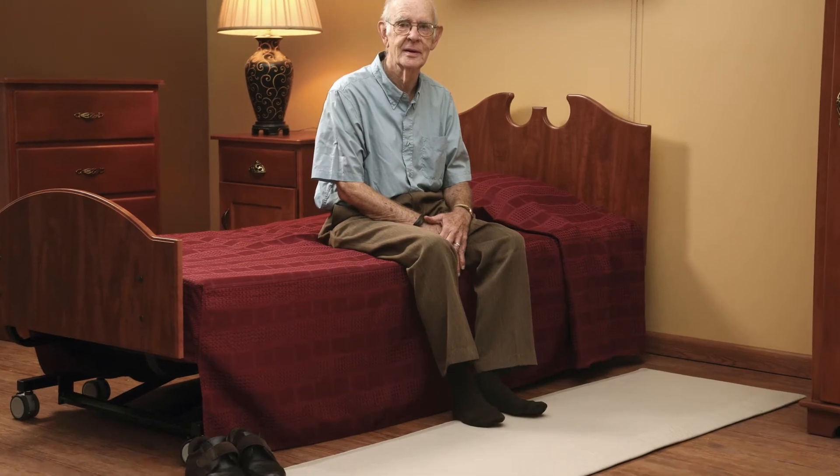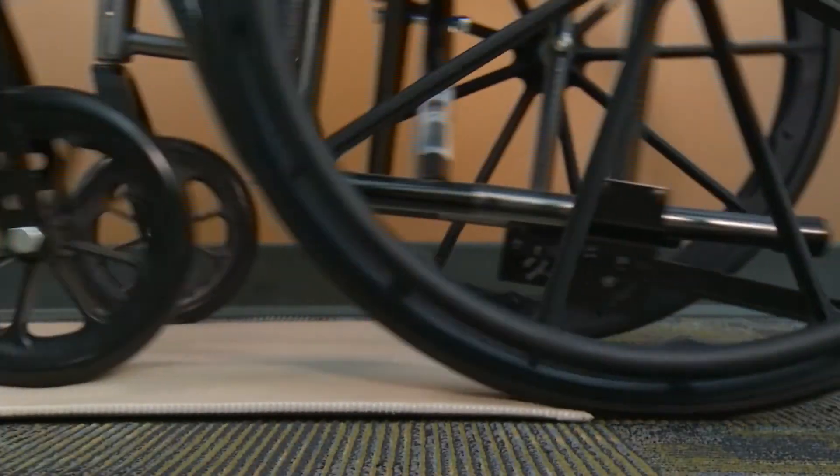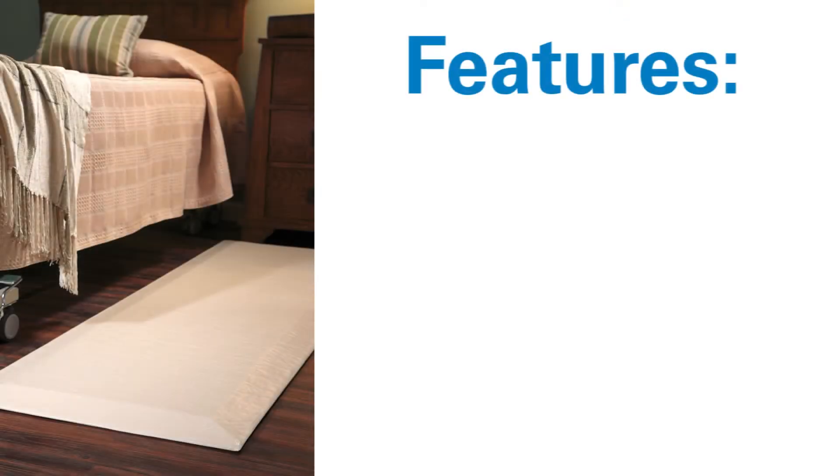With its low-profile one-inch beveled edge, the Protector Bedside Mat lets wheelchairs pass easily over it. The Protector Bedside Mat comes in two convenient sizes, 24 inches wide by 70 inches long and 36 inches wide by 70 inches long.